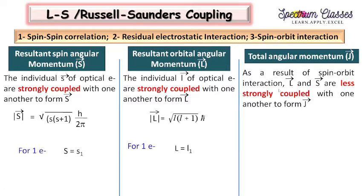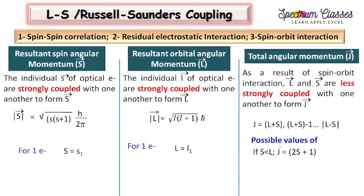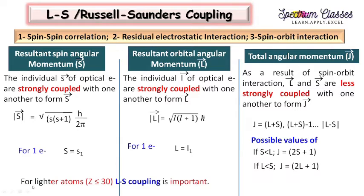That is why we call this L-S coupling, or Russell-Saunders coupling. The total angular momentum J has values from L plus S to L minus S, differing by one. It has possible values equal to 2S plus 1 if S is less than L, or 2L plus 1 if L is less than S. This L-S coupling is applicable for lighter elements of the periodic table - atoms with atomic number less than 30.